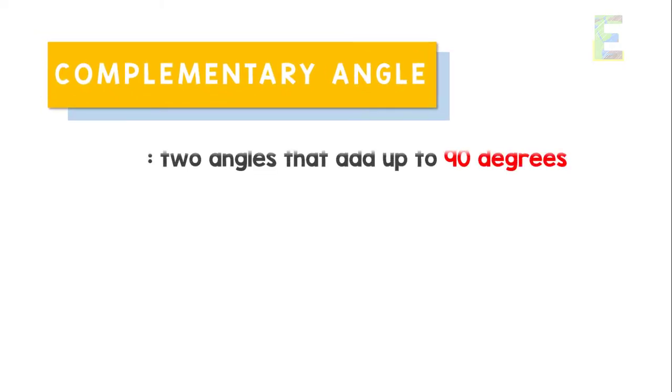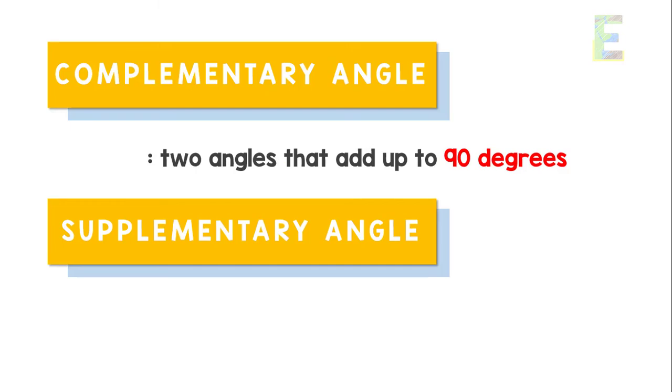Complementary and supplementary angles sound fancy and complicated, but in reality, their concept is very simple. Again, just remember that complementary angles are two angles that add up to 90 degrees and supplementary angles are two angles that add up to 180 degrees.